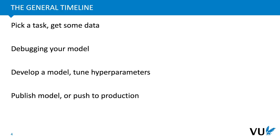The general timeline for a deep learning project looks like this. We pick a task, we get some data, we build and debug a model, we develop the model, tune the hyperparameters, and then if we're in academia, we publish our model, or if we are in a commercial setting, we push the model to production. So we'll go through the process in this order.